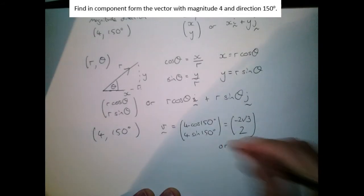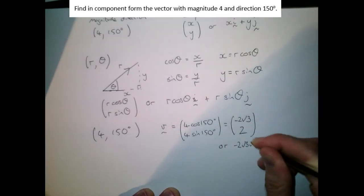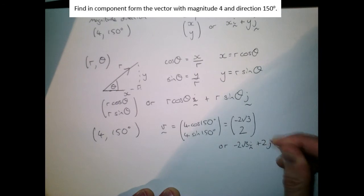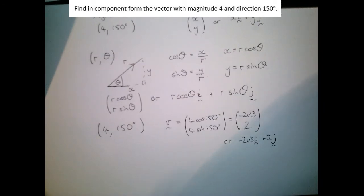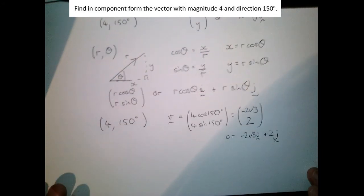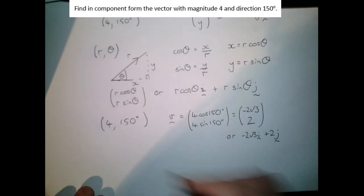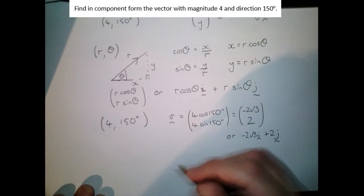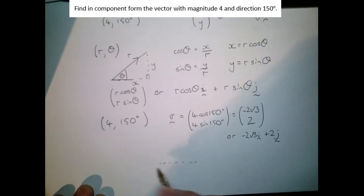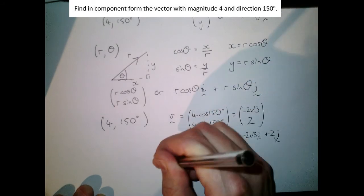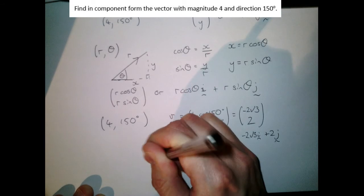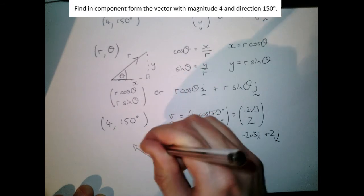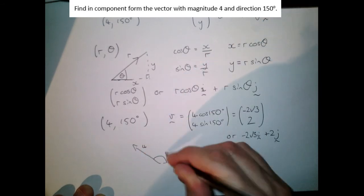Of course we could write that as being minus 2 root 3 i plus 2 j, either is acceptable. Let's just check that we feel confident with this. This was a vector with an angle of 150 degrees when we measure it from the positive x-axis, 150 degrees, where is that, about there, of length 4.